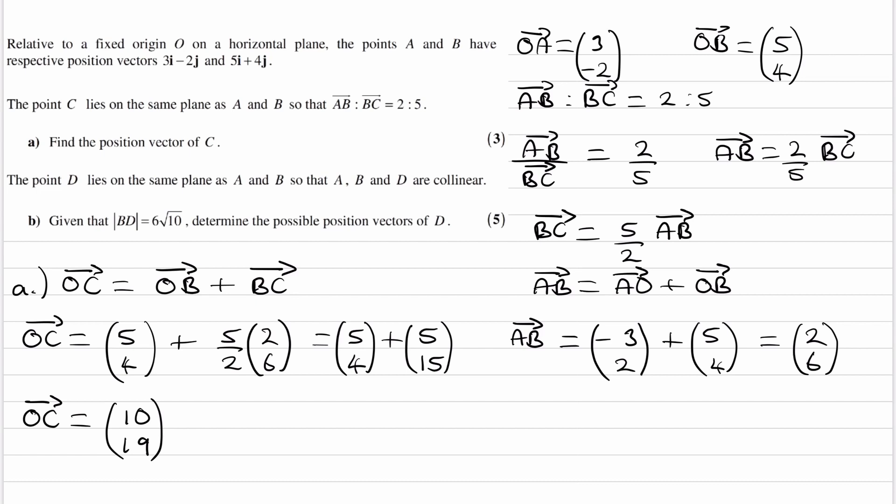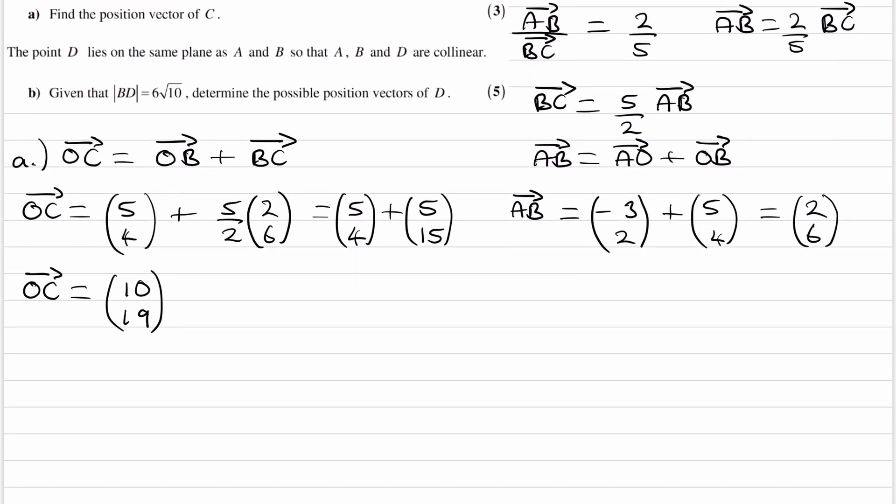So this will be the position vector of C. For part B, we're told that D lies in the same plane as A and B such that AB and D are collinear.